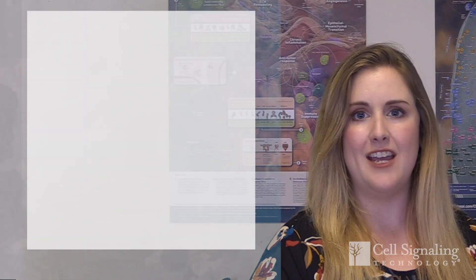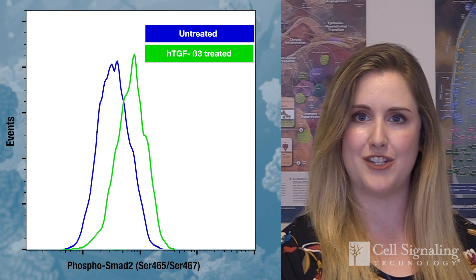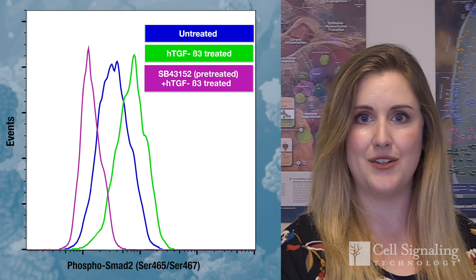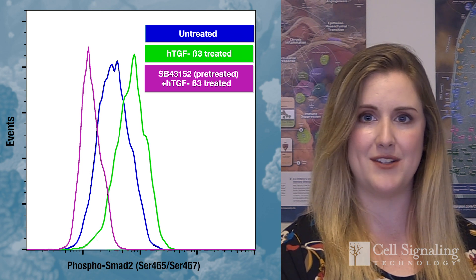Number five, finally, including a known positive and negative control in your experiment can tell you if there is an issue with your experimental design or if your antibody is not performing as expected. If a control treatment is known to modify the phosphorylation of your target, this can give you an idea of the magnitude of change to expect in the readout of your experimental samples.